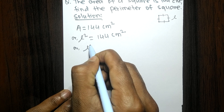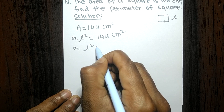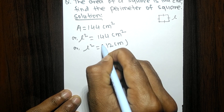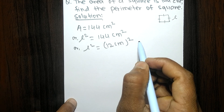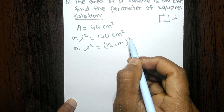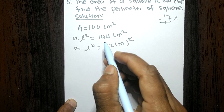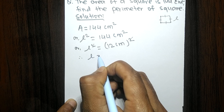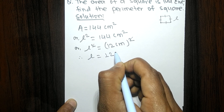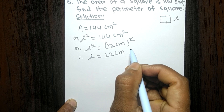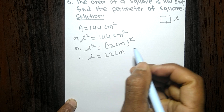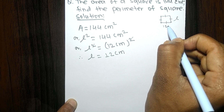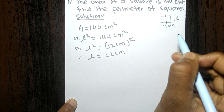Since l squared equals 12 centimeter whole squared, the squared terms cancel, and we get l equals 12 centimeter. So the length of each side of the square is 12 centimeter.